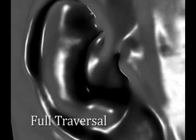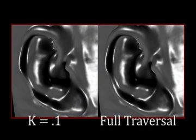We will now investigate the effect of kappa on image quality. We will look at a close-up of the ear isosurface on the visible human male dataset. We see that kappa equals 0.5 is almost indistinguishable from full traversal.